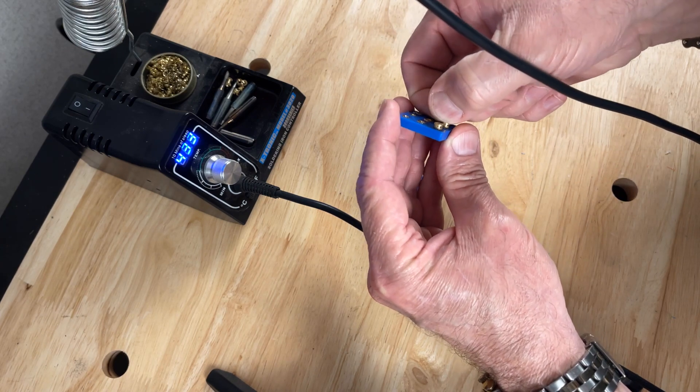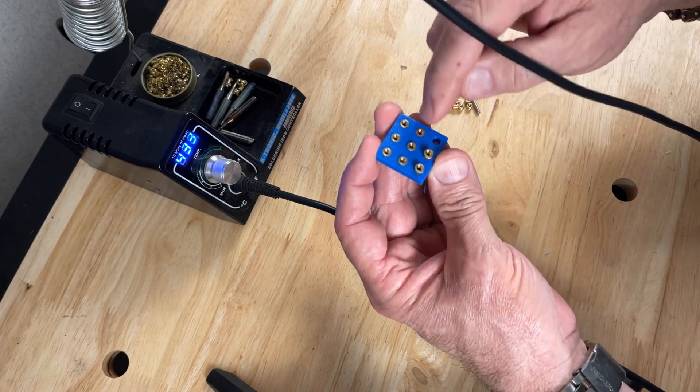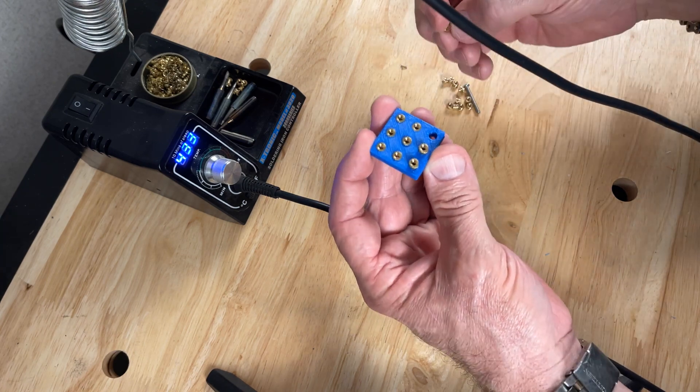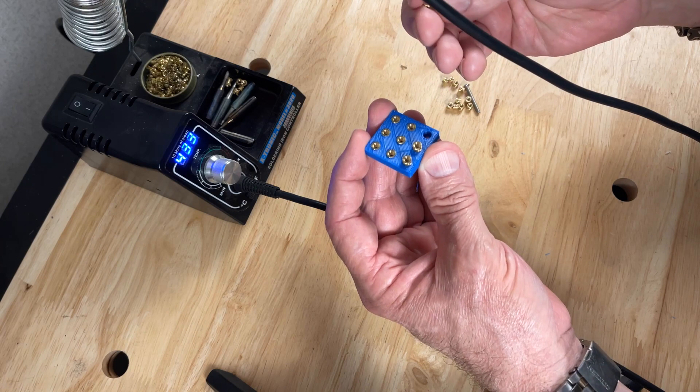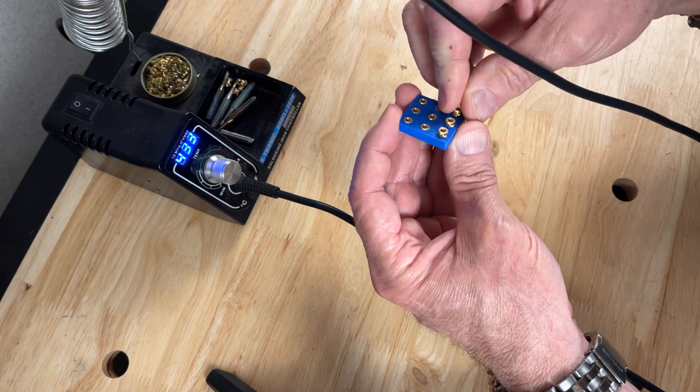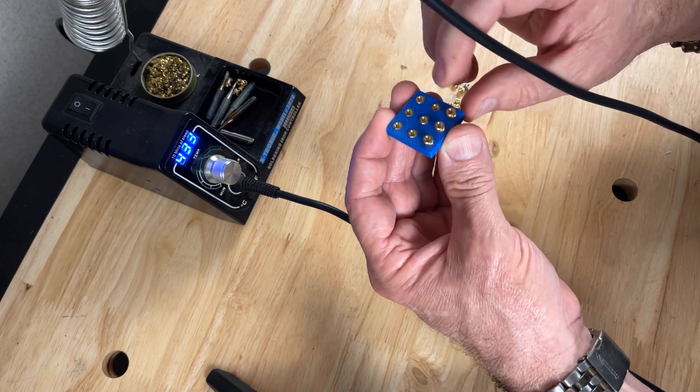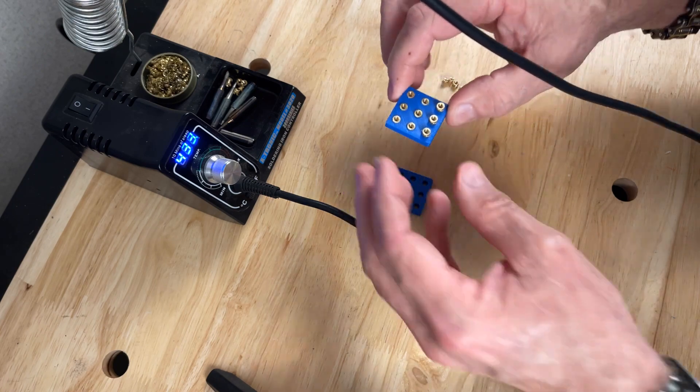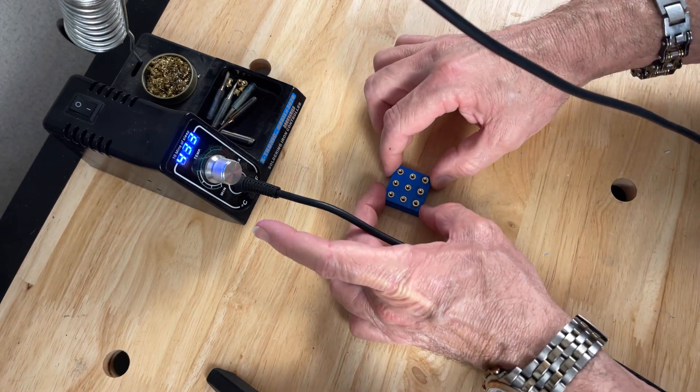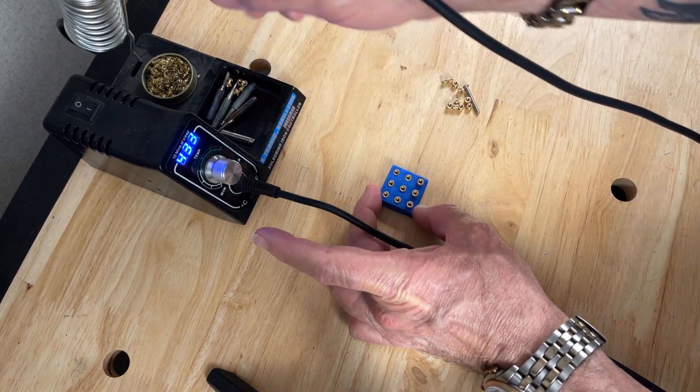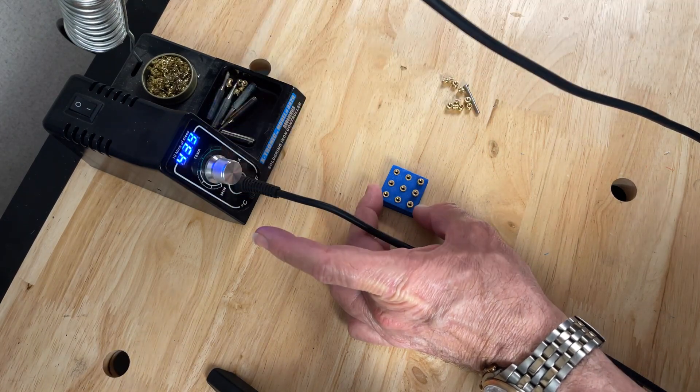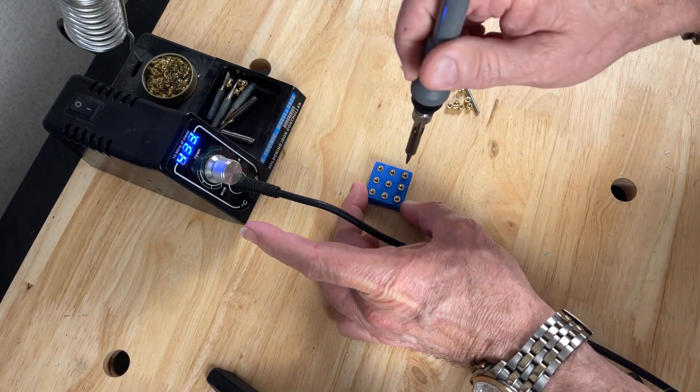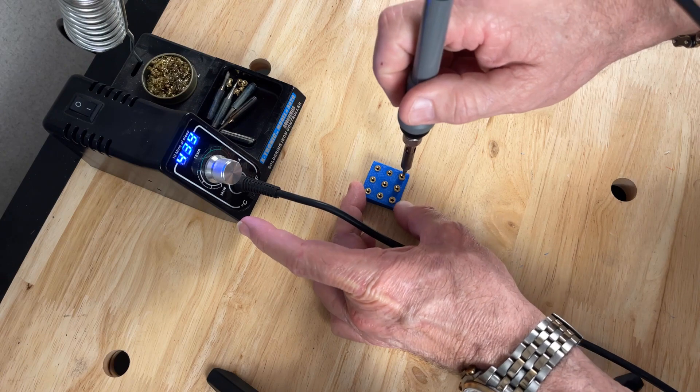And just a word of caution: right after you set those and you pull the soldering iron away, those for a good 30 seconds are hot enough to still burn, so you don't want to touch them even after you set them in there until they get a chance to cool off. So iron set to 439 Celsius now, we'll go ahead and set three more of these, just like before.